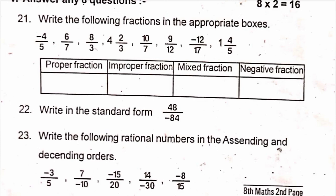write the following rational numbers in the ascending and descending order. So, minus 3 by 5, 7 by minus 10, minus 15 by 20, 14 by minus 30, minus 8 by 15. So, in the rational numbers, ascending order and then descending order. So, LCM find it, then arrange it. 23rd question.